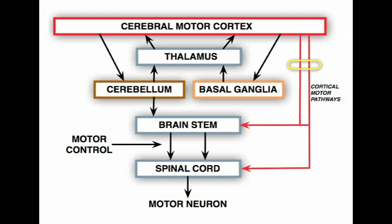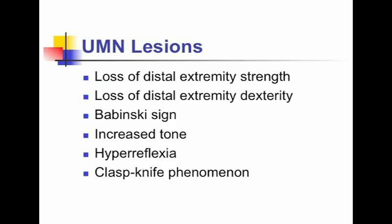When there is a lesion of the upper motor neuron — the corticospinal tract and its collaterals to the brainstem motor nuclei — the clinical findings are a combination of the loss of direct effect of the corticospinal tract on the lower motor neuron plus the loss of control and modulation of the indirect brainstem motor control centers. The clinical findings from an upper motor neuron lesion include loss of distal extremity strength, dexterity, and a Babinski sign. These are all from loss of the direct corticospinal tract effect. Plus we have the findings of increased tone, hyperreflexia, and the clasp knife phenomenon.